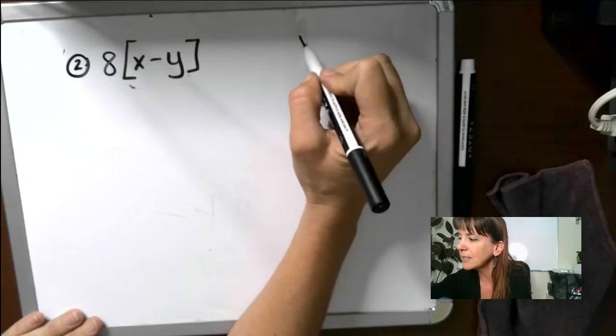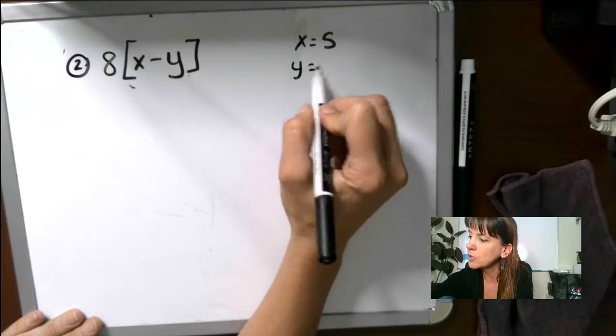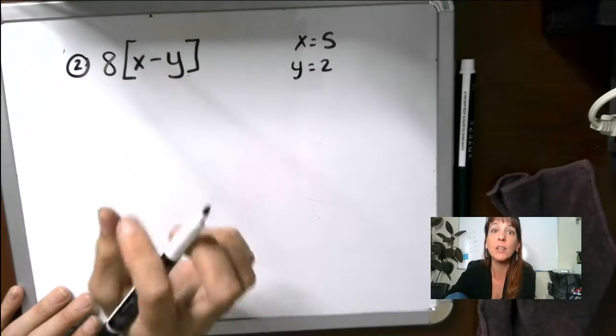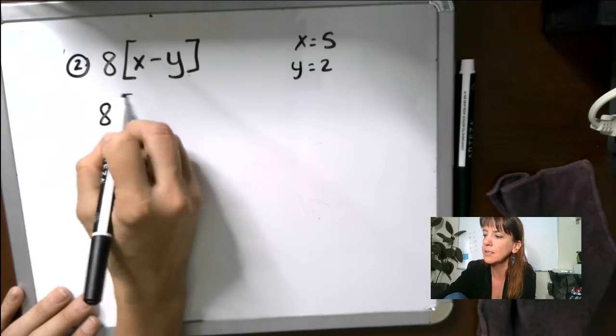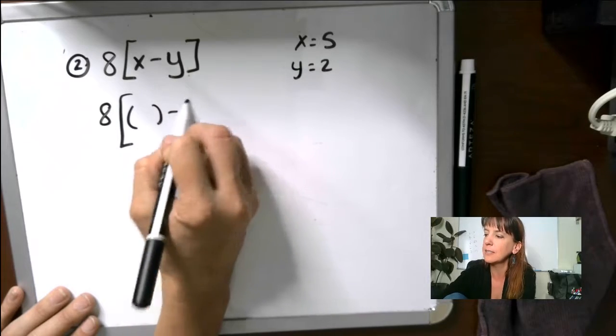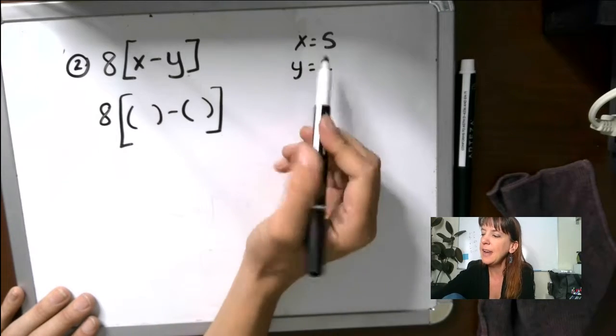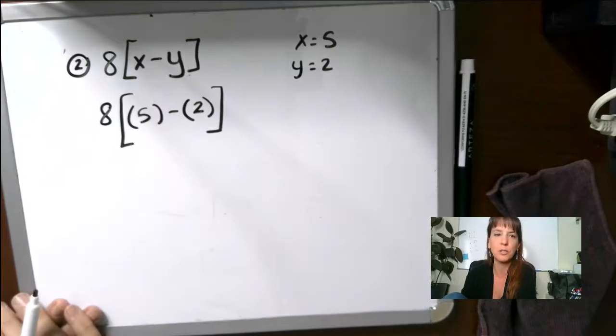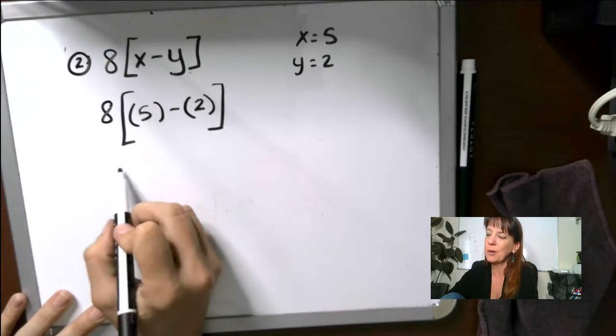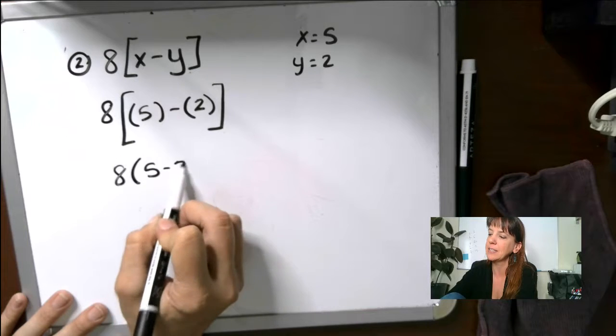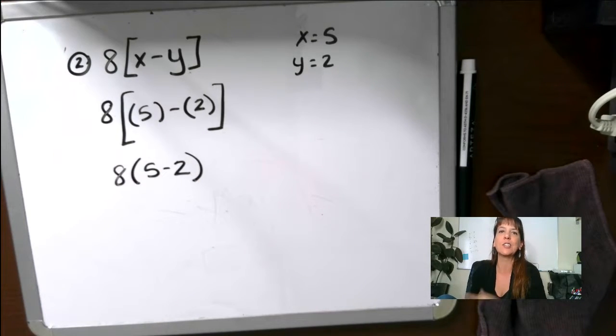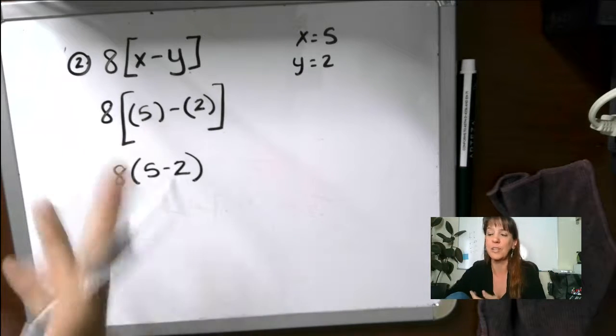And then we have x equals 5 and y equals 2. So the next thing you should do is, wherever there's a variable, put in parentheses. So 8 bracket, we're going to throw in some parentheses like this. And now we're going to plug in, right? So we've got 5 minus and y equals 2. So really what the problem looks like is this, right? 5 minus 2. So the bracket part, not totally necessary, but it is good if you get like a really long one. That's a good thing to think about.